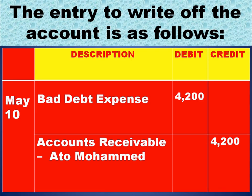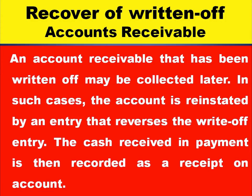The entry to write off the account is as follows. The description references the customer David — bad debt expense is debited, and accounts receivable is credited for the write-off amount. So, bad debt expense: debit; accounts receivable: credit. This records the write-off under the direct write-off method.